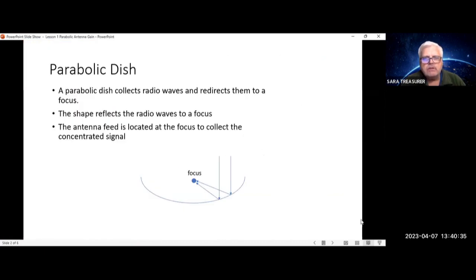A parabolic dish collects radio waves and redirects them to a focus. The shape is meant to have all the beams coming from whatever angle hits the dish into that focus. This is where you normally put your feed in order to collect all the signals that's being collected by the antenna.